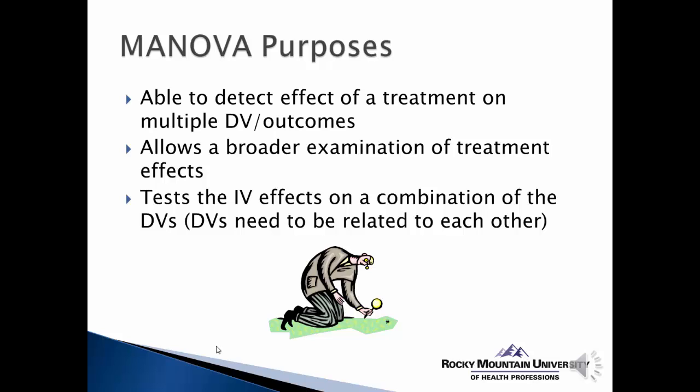MANOVA tests the independent variable effects on a combination of the dependent variables, as well as on each outcome separately. One assumption is that the outcomes need to be somewhat related to each other — they cannot measure things that are distinctly opposite or distinctly different from one another. They need to have some relationship or similarity to one another.